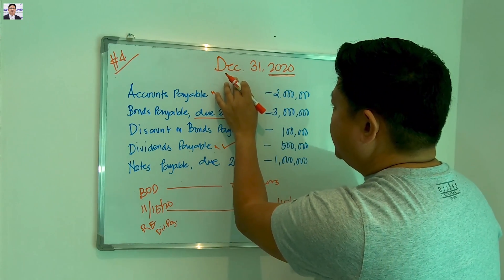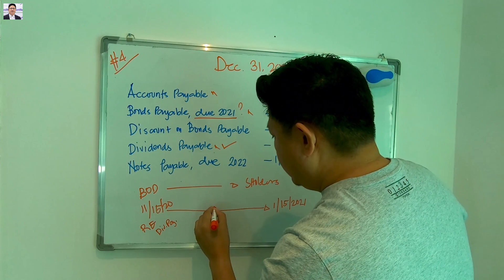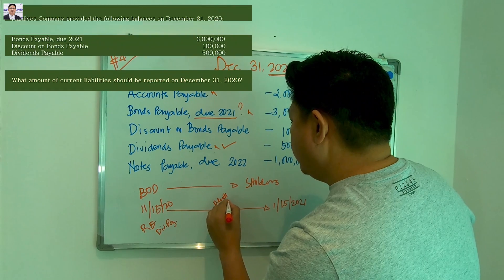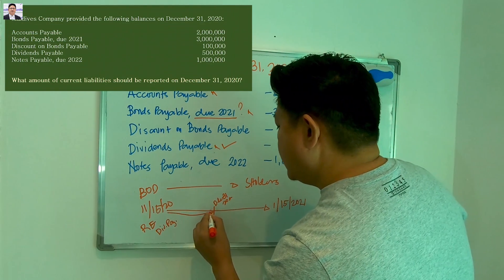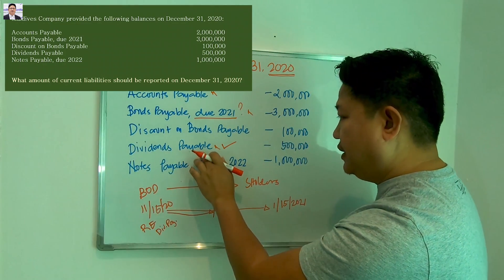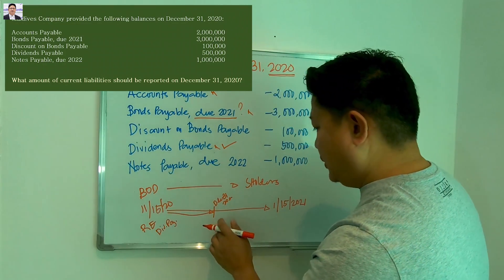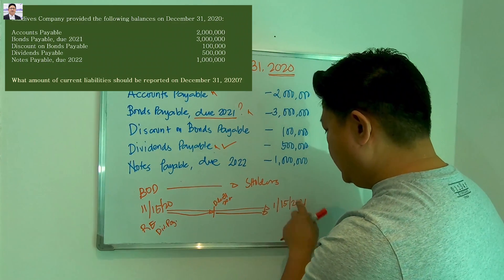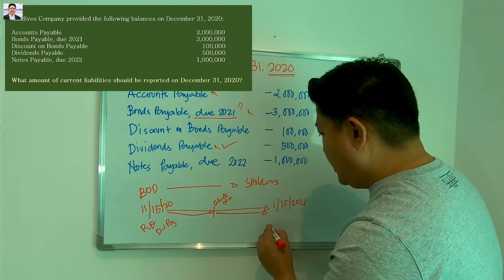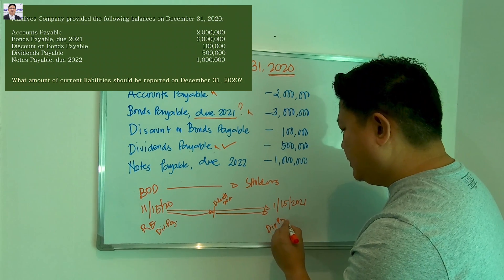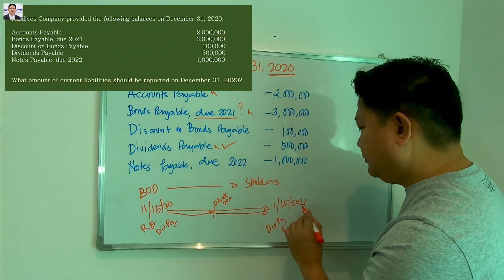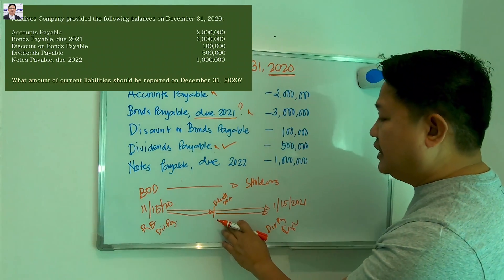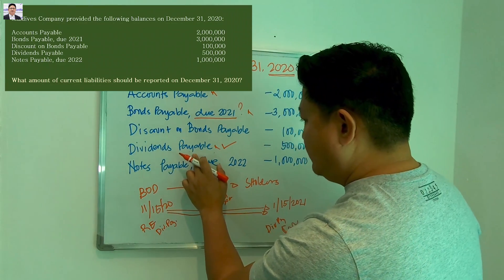We are preparing the financial statement on December 31, 2020, so dividends payable is still a liability at this point — up until the payment is made on January 15, 2021. At that point the entry is to debit dividends payable and credit cash. So yes, we consider dividends payable as a current liability.